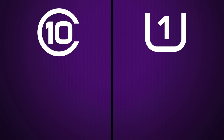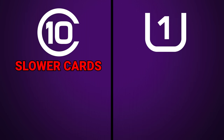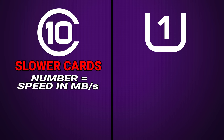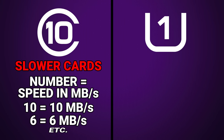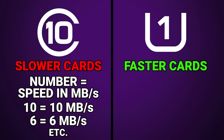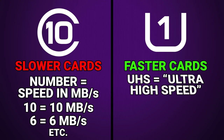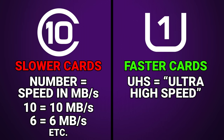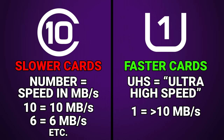You're going to see a number either within the letter C or the letter U. The C is used for slower cards, with the number indicating the write speed in megabytes per second, while U is for faster cards called UHS, for Ultra High Speed. A number one inside the U means it gets at least 10 megabytes per second of write speed, while a three indicates at least 30 megabytes per second.